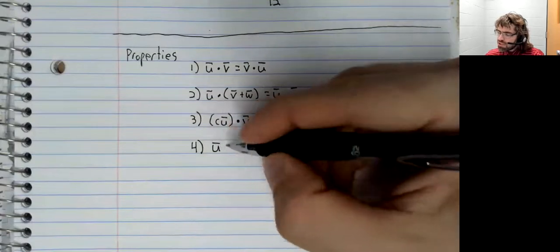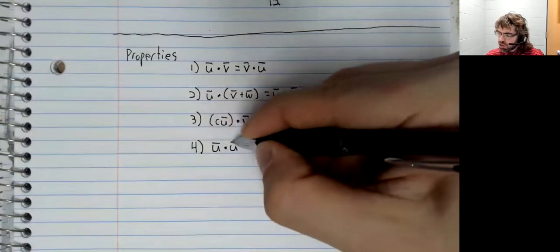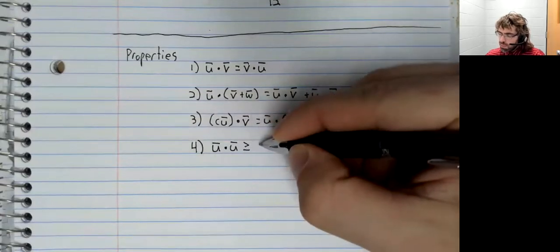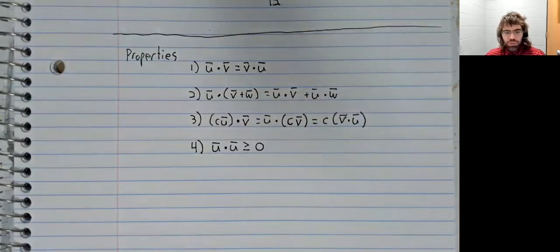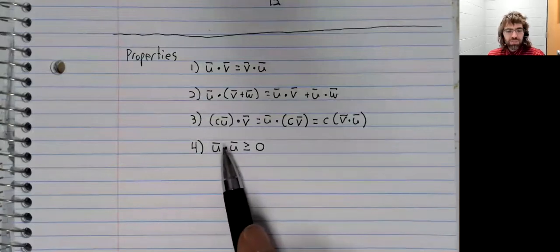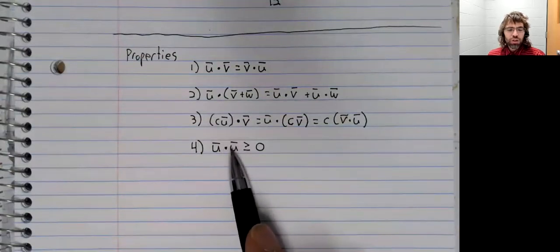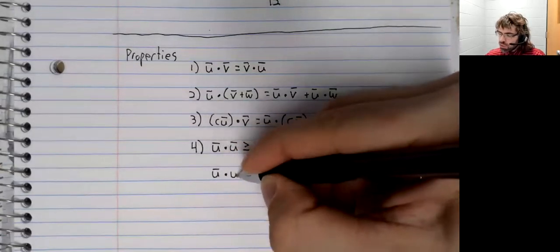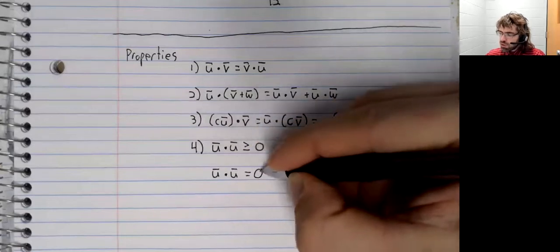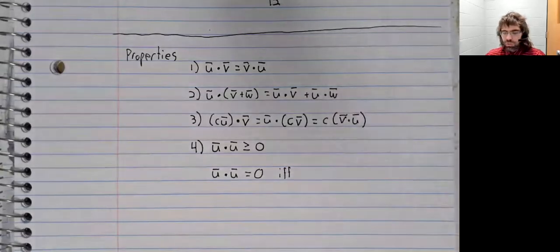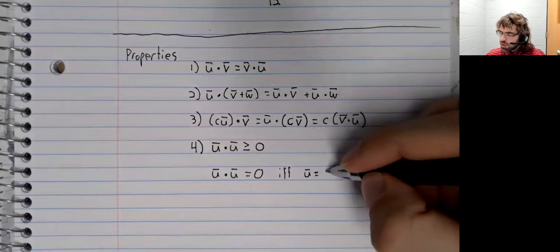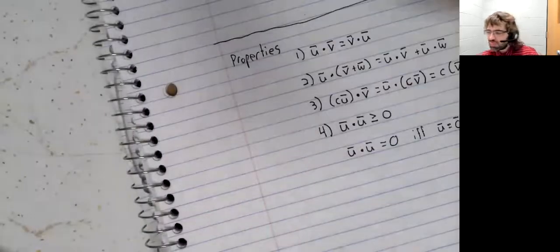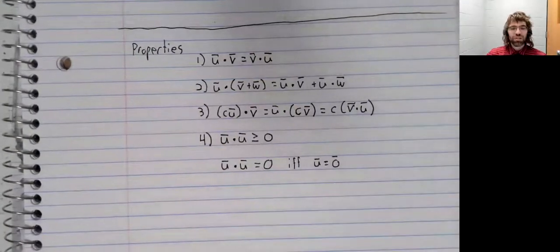What we do have is the zero product property in the special case where we have a vector dot product with itself. U dot U is always non-negative. There's our intuition about squaring. And U dot U equals zero if and only if U is the zero vector.